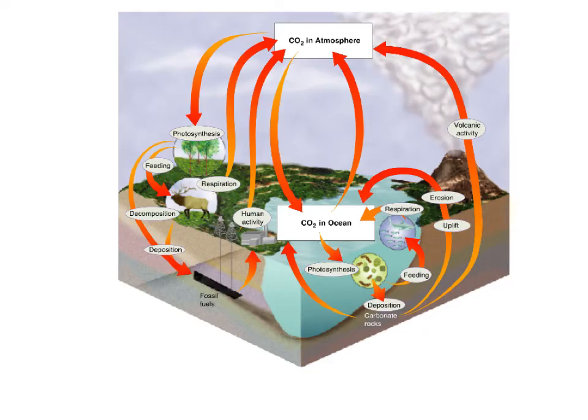Here we have the diagram of CO2. We have volcanic activity, photosynthesis and respiration represented, and human activity. Oceans take in a lot of CO2 for photosynthetic organisms in the ocean. Only about 1% of carbon moves through the biosphere.